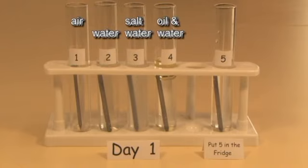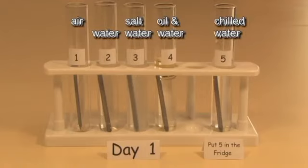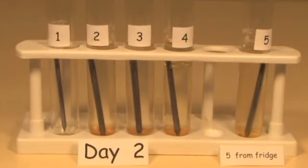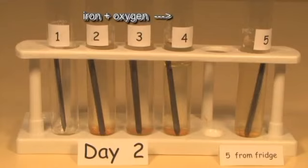The oil stops oxygen from entering the water. In test tube 5 we have chilled water. In the rusting reaction iron combines with oxygen to form brown iron oxide.